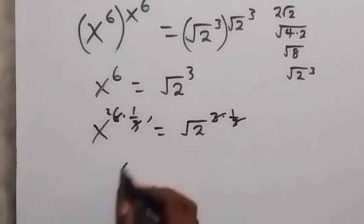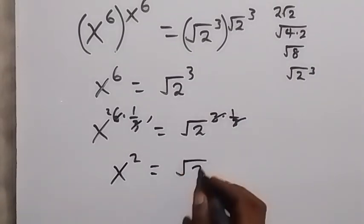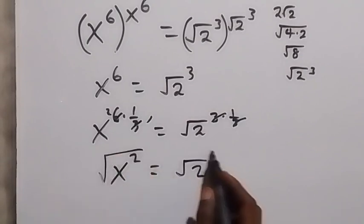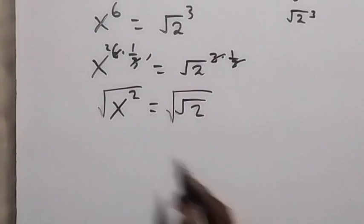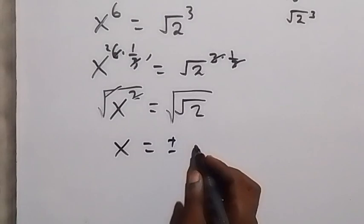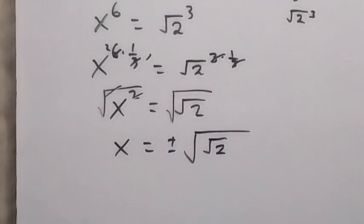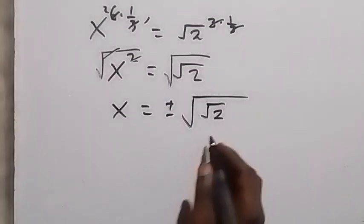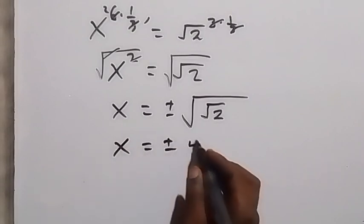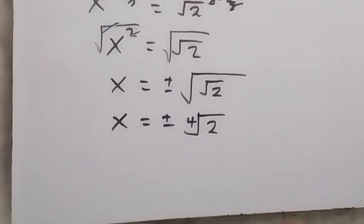We have x squared equals root 2. Since we are finding x, let's remove the square by putting the square root on both sides, so the square and square root cancel. This gives us x equals plus or minus the square root of root 2, which can be written as the fourth root of 2.